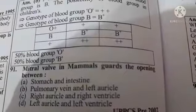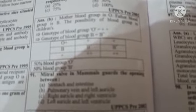Next question: the mitral valve in mammals guards the opening between — Option A: stomach and intestine, Option B: pulmonary vein and left auricle, Option C: right auricle and right ventricle, Option D: left auricle and left ventricle. The correct answer is Option D: left auricle and left ventricle.